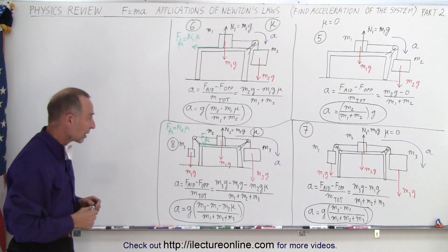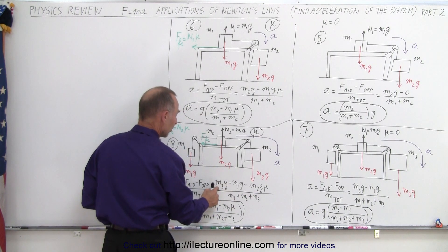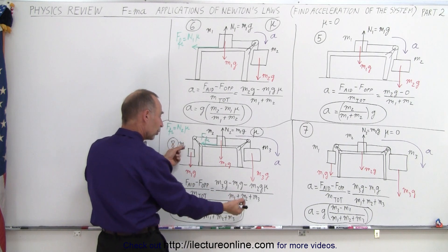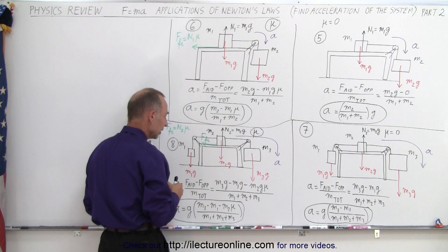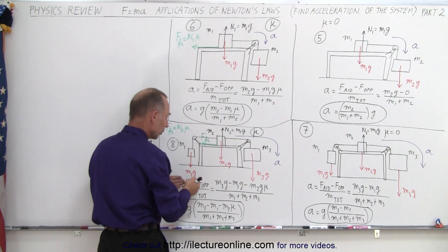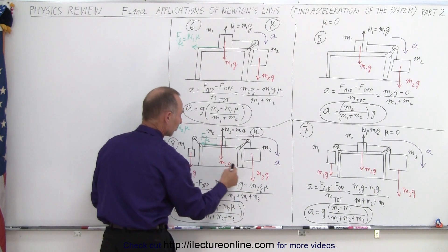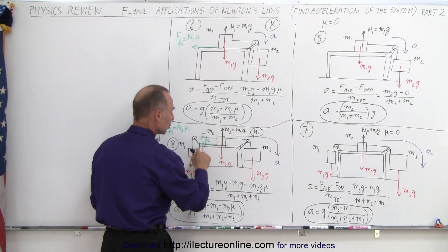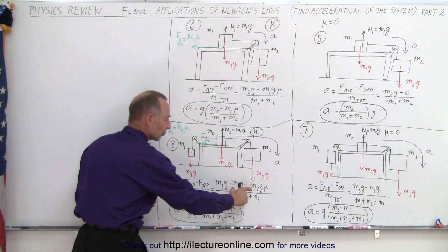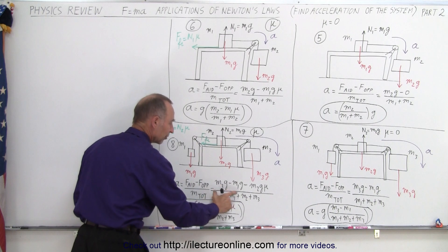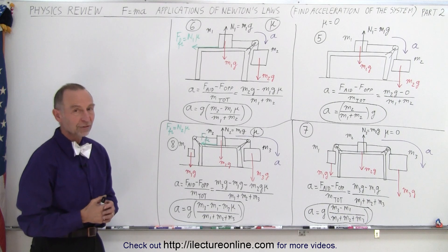And then finally, in our final example here, notice we have the aiding force, M3g, but we have an opposing force right here, because this force will cause the whole system to accelerate in the counterclockwise direction, if it was the prevailing force, so it opposes the assumed direction, and also the friction force assumes the opposing direction. In this case, it's N2 times mu. N2 is M2g, so M2g mu is the opposing friction force. Subtract the two opposing forces from the aiding force, divide by the total mass, in this case there's three masses, and that gives you the acceleration of the system.